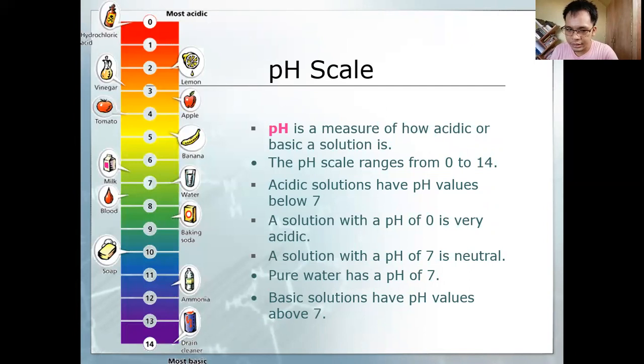Here is the pH scale, as we can see here, from 0 to 14. The ranges from 0 to 6 are acidic. 7 is neutral, the example is water. Ranges from 7.1 to 14 are bases. pH is a measure of how acidic or basic a solution is.